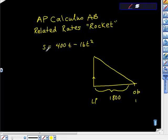The height of the rocket is S, this is 1800 feet, and this is U, the hypotenuse. What we're looking for is this distance right here. I'm going to start with the distance formula. U squared is equal to S squared plus 1800 squared.